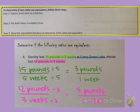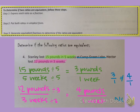So Stanley lost three pounds per week and Hector lost four pounds per week. Are those equivalent ratios? Is it true that three over one equals four over one? No, it's not true. So the answer is no — these are not equivalent ratios.